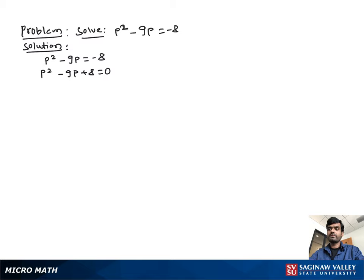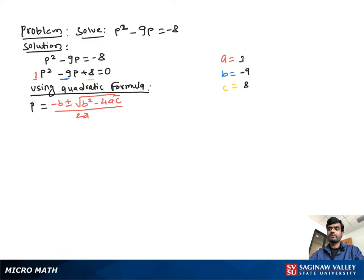p² - 9p + 8 = 0, and the value of a, b, c will be: a = 1, b = -9, and c = 8. Now using quadratic formula, p